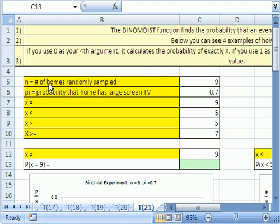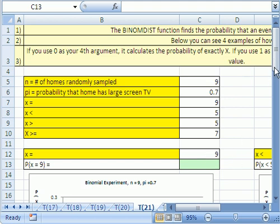What is a binomial experiment? Let's give an example. What if we're looking at homes, randomly sample nine homes, and we're going to ask the question, do you have a large screen TV? From past data, we know that 0.7 houses have large screen TVs. So what if we wanted to find the probability that all nine of them had a large screen TV? Binomial experiment. And there's a great function BINOM.DIST that will tell us just that.